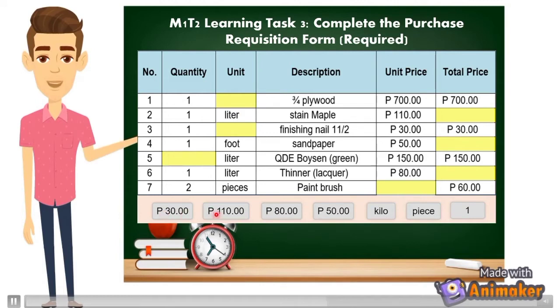You'll drag each item to the yellow highlighted cells to complete the requisition form table. There are 1, 2, 3, 4, 5, 6, 7 items that you need to locate in the correct position.